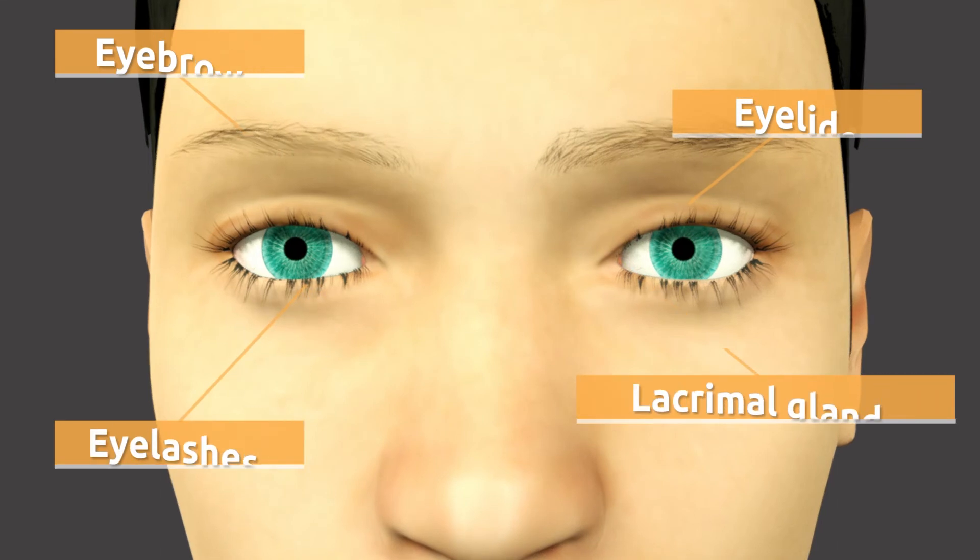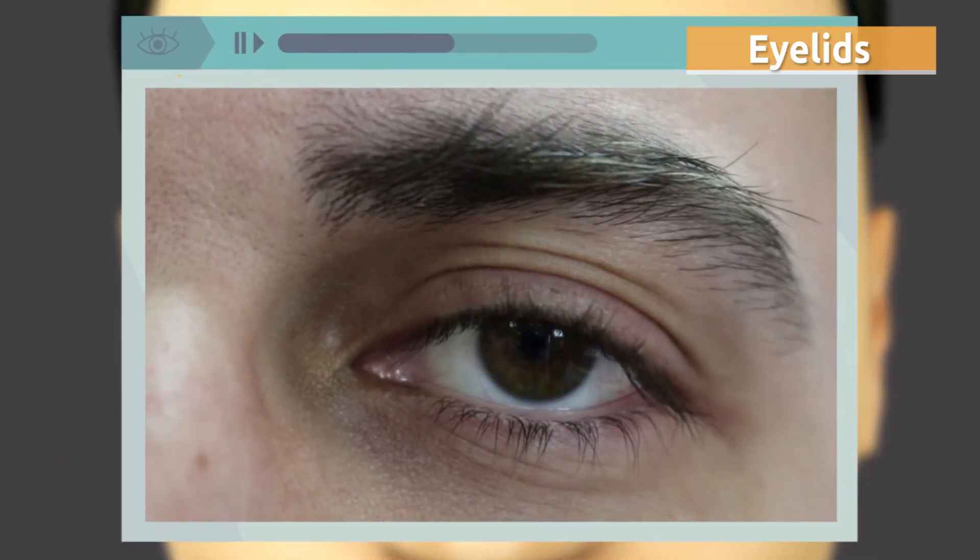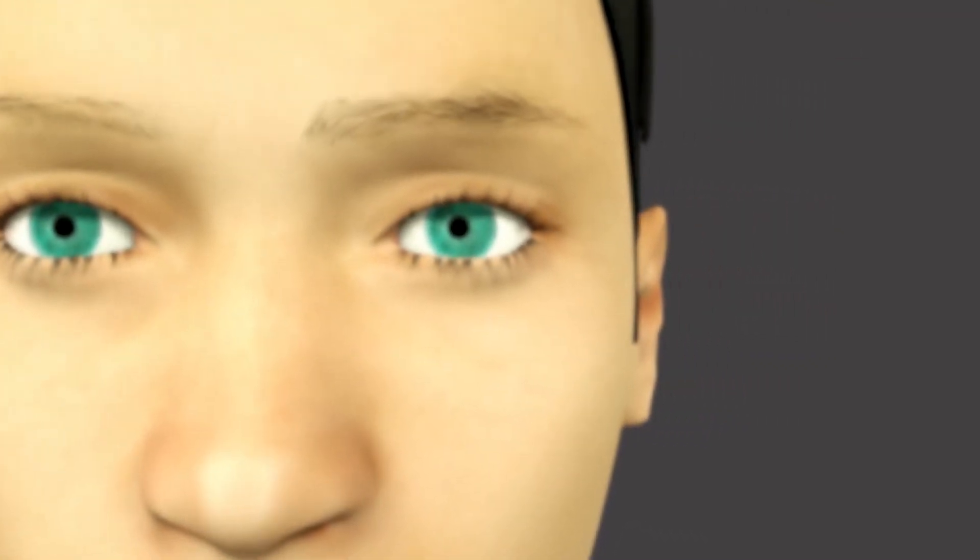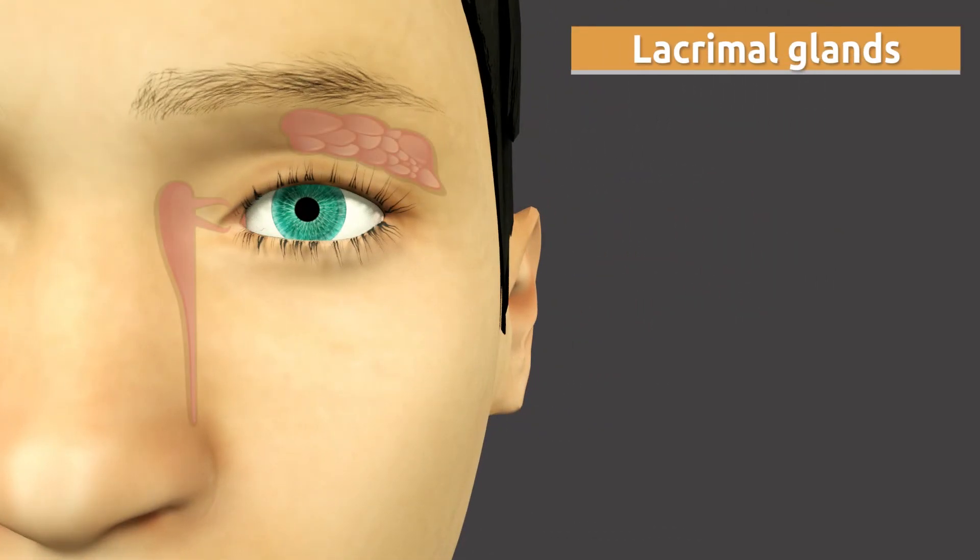The eyelids open and close many times per minute and help the eye stay clean and moist. The lacrimal glands help clean the eye and eliminate the germs and the dust that reaches the eye.